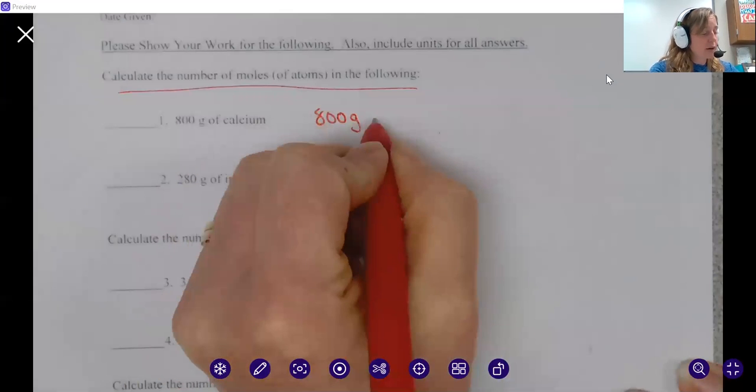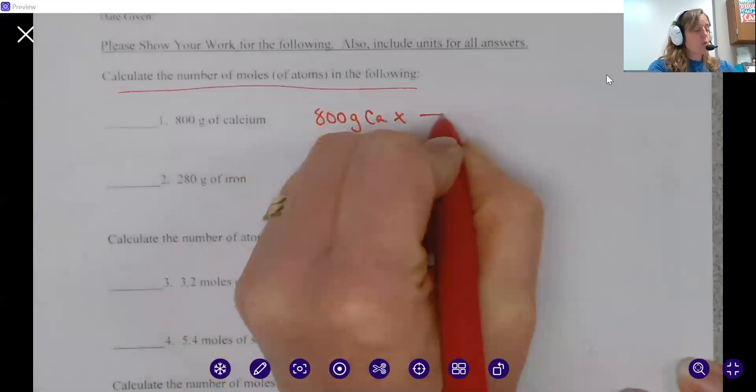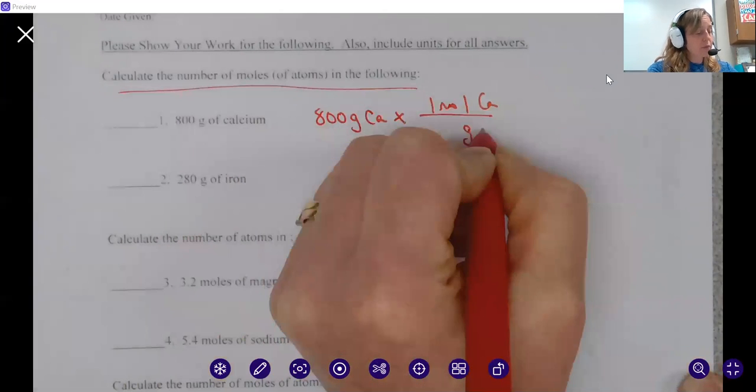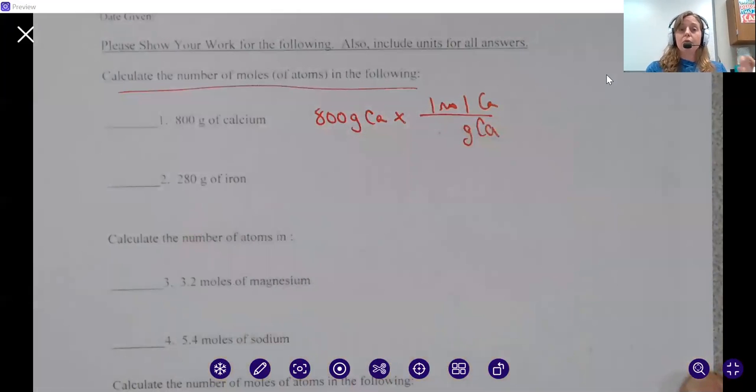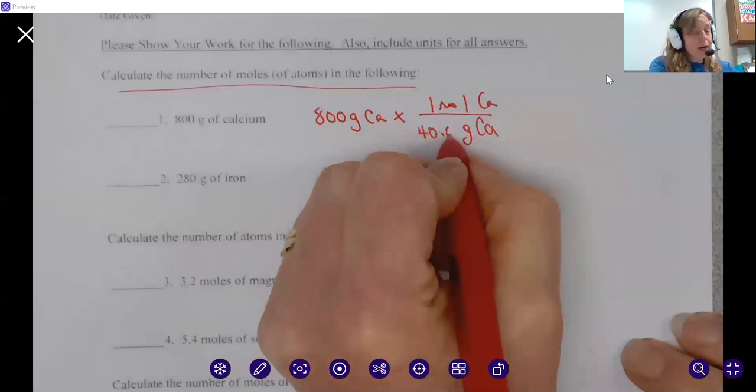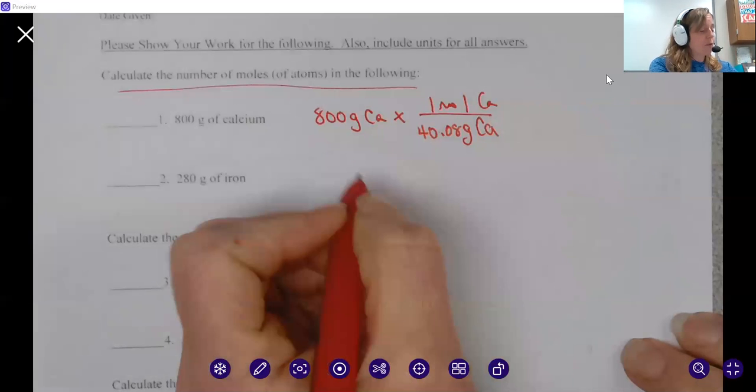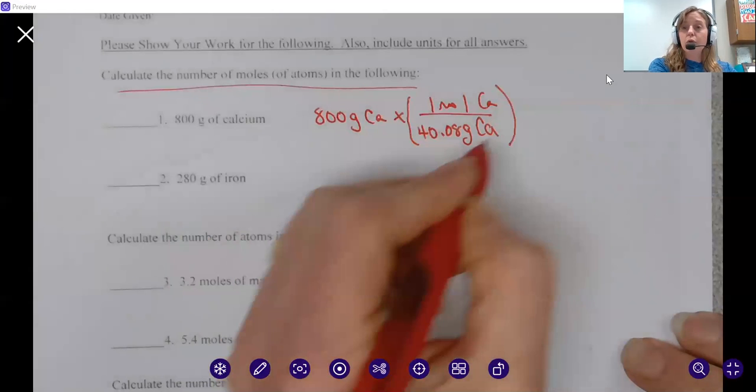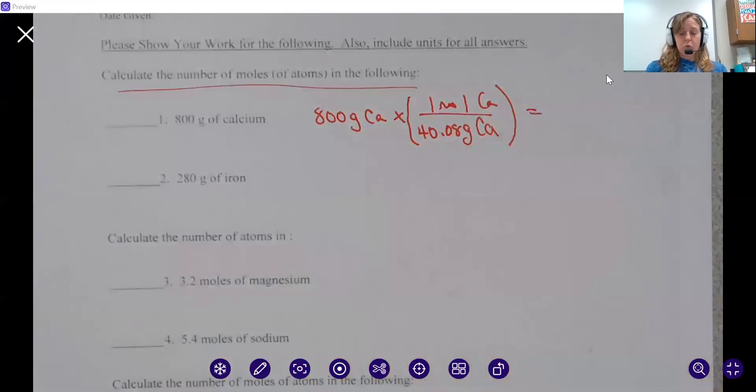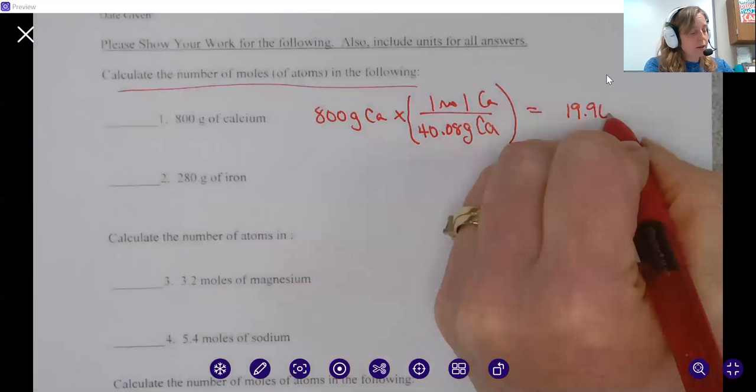So 800 grams of calcium times one mole goes on the top because that's what we're looking for, and grams of calcium goes on the bottom. We have to find the molar mass of calcium, which is 40.08. So we multiply the grams by the fraction one over 40.08. We take 800 times one over 40.08, and that gives us 19.96 moles of calcium.